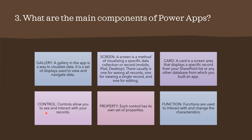The fourth component is control — a control allows you to see and interact with your record. The fifth is property: each control has its own set of properties. The sixth is function: functions are used to interact with and change the characteristics of your controls.